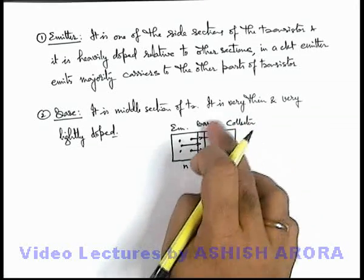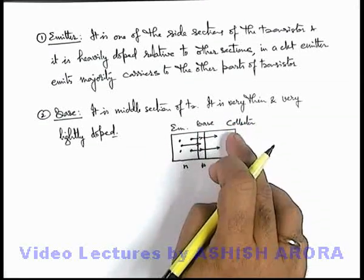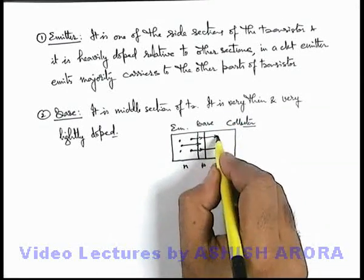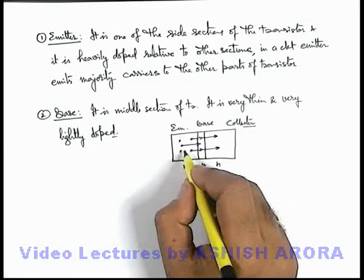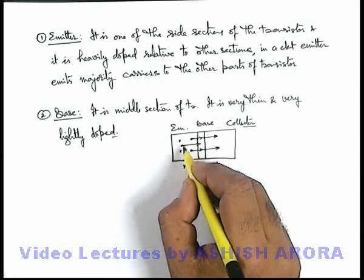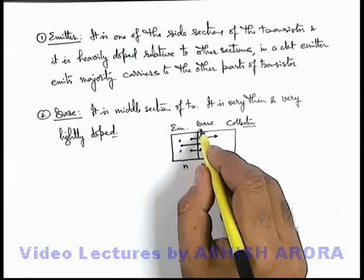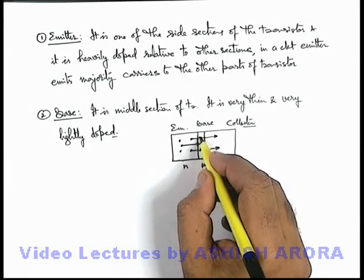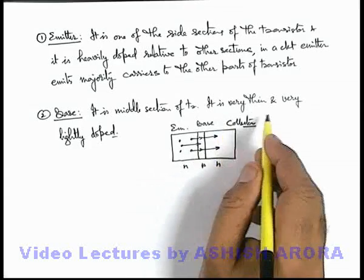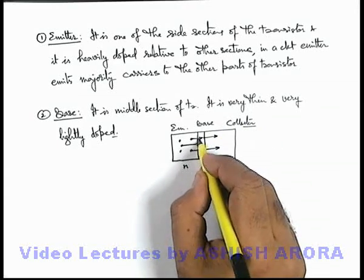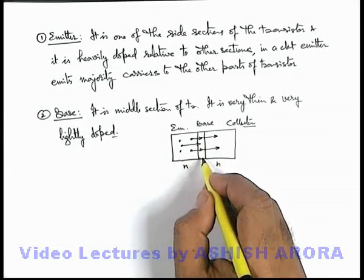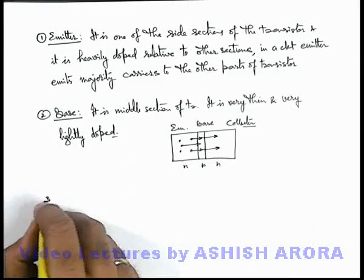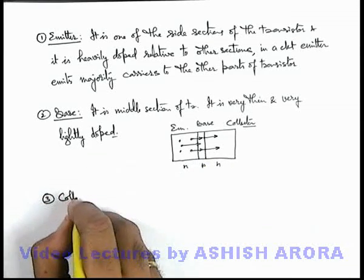That's why this section on the other side of base is called collector, because it collects majority of carriers which are emitted from emitter. And base is not able to absorb most of these charge carriers because it is very lightly doped and very less number of majority carriers are available.